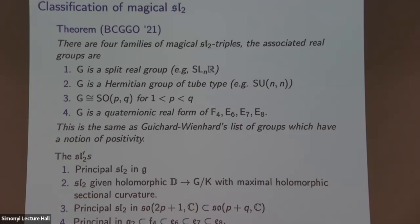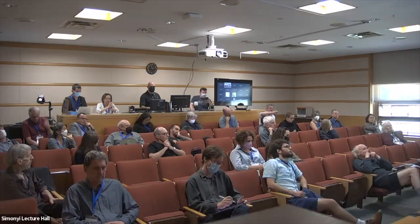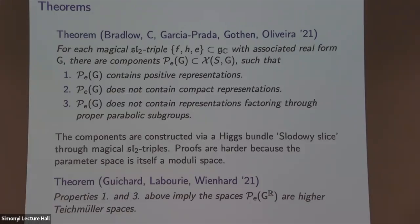Question: there are also Anosov representations that don't lie in the Hitchin component. In the previous theorem it says the components contain positive representations — and in these cases they are higher-rank Teichmüller spaces on the nodes. Where do these other Anosov representations show up on the Higgs bundle side? One thing you can do is the Slodowy slice construction for other SL₂s — any SL₂ defines an embedding of SL₂ into my Lie group and I can embed Teichmüller space there. But when I do that, I get a closed set of dimensionally smaller than the whole character variety. There are plenty of Anosov things which don't arise this way.